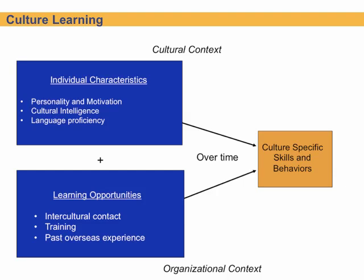In this graphic under cultural learning through context — the cultural context at the top and the organizational context at the bottom — you see individual characteristics that stand out. These will be different for each person depending on their experiences and what cultural grid they're coming from, plus the learning opportunities they have within another culture, the training they have, any overseas or intercultural experience. Over time, they'll blend these into specific cultural skills and behaviors to help them assimilate and adapt into that new culture.